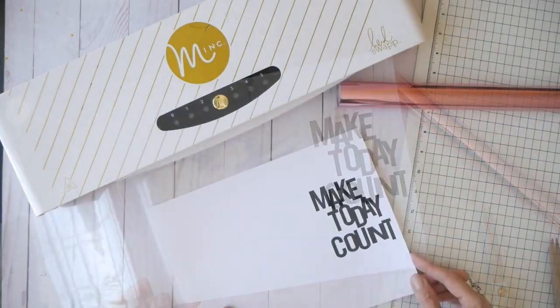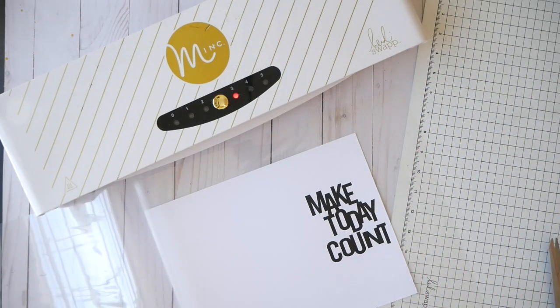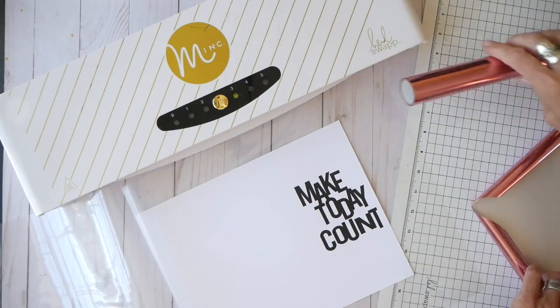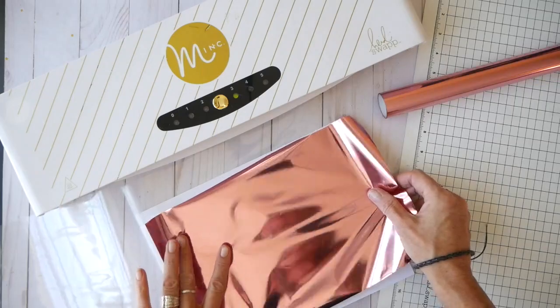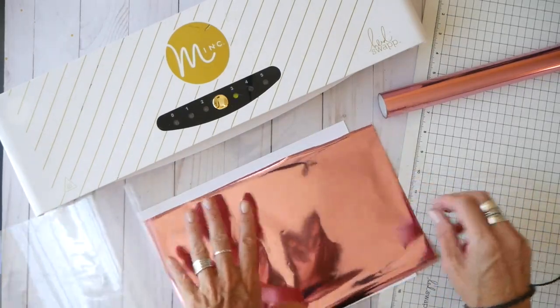So what I'm going to do is place the printable inside the carrier envelope, and I'm going to cut a swatch of foil to fit over. Now, I made my foil piece a little big. All that really needs to be covered is actually what is printed.